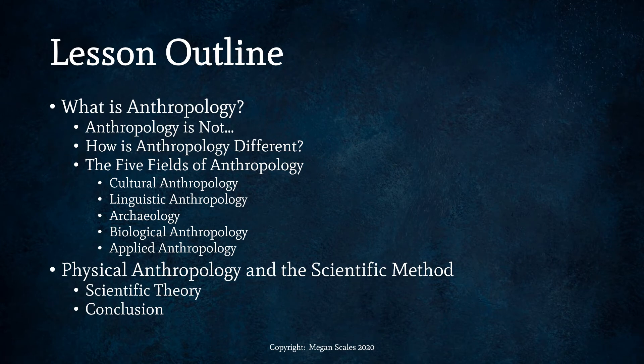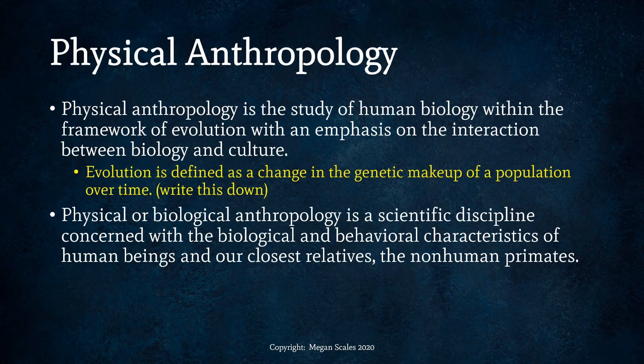Here is our outline of topics we're going to be discussing: features of anthropology, defining the five fields of anthropology, focusing in on physical — also called biological — anthropology, and also talking about the scientific method, specifically focusing on the difference between a hypothesis and a theory and how the term theory is used in science. And then we will have our conclusion.